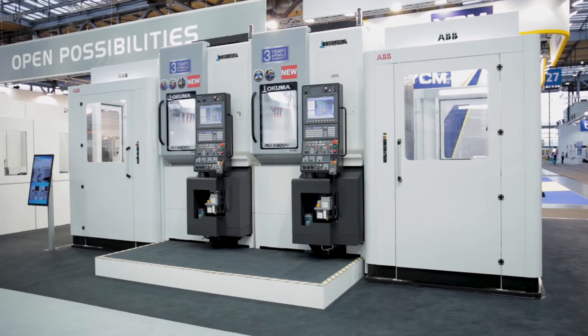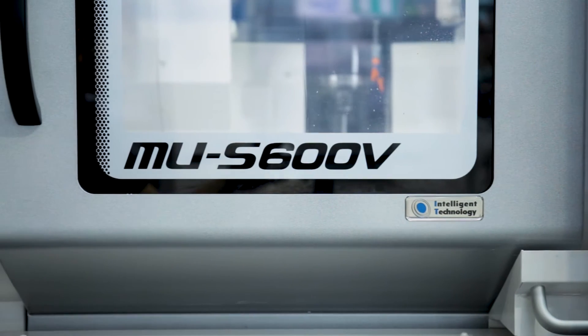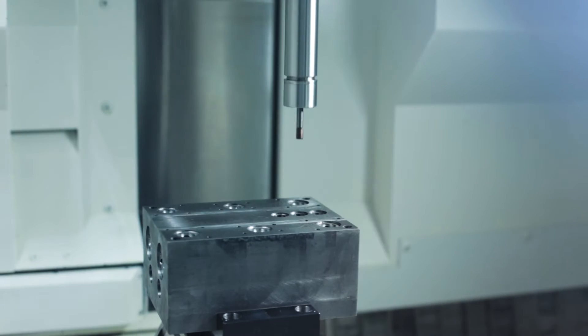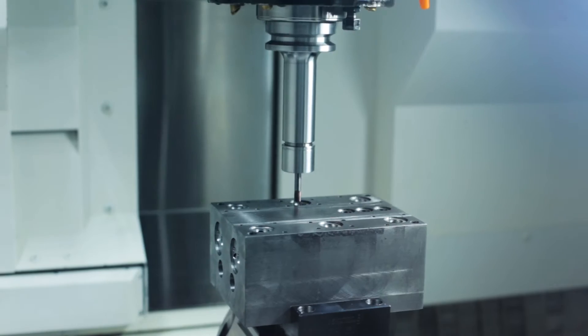I think the most important thing what we developed is our new MUS600B machine. It's a very compact vertical machining center. It has a 5-axis capability, means 3 plus 2, so the rotary axes are for positioning.